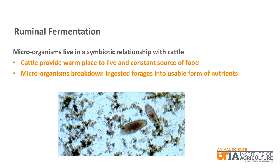The microorganisms and the animal live in a symbiotic relationship, meaning it is beneficial for both. The animal provides a warm place to live with a constant source of food — rumen board, so to speak. The microorganisms break down the ingested forages into a usable form that the animal otherwise would not be able to use. Here is a microscopic view of rumen microorganisms. The large brown oblong shapes are one kind of microorganism that is eating and breaking down forages for the animal.